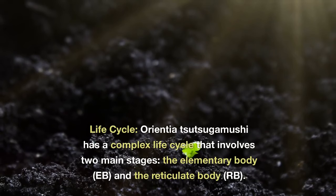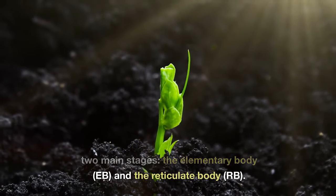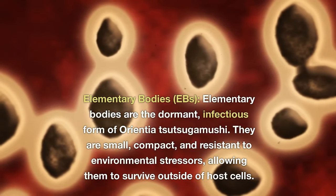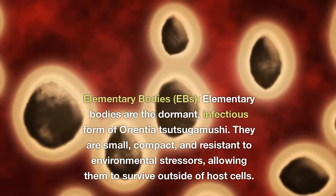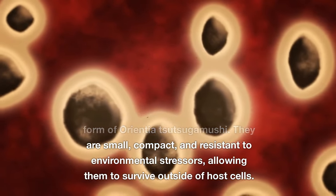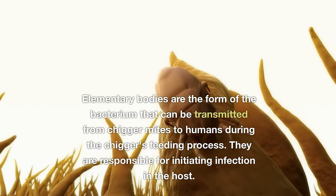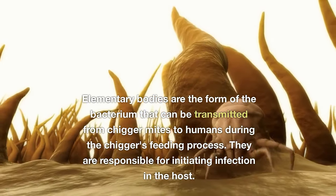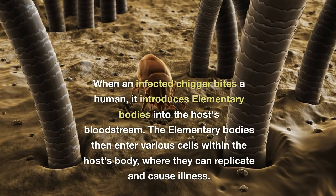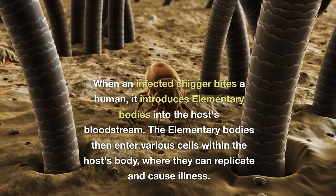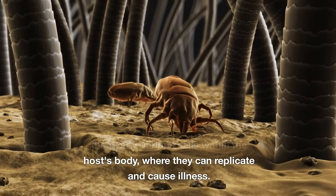Orientia tsutsugamushi has a complex life cycle that involves two main stages: the elementary body (EB) and the reticulate body (RB). Elementary bodies are the dormant, infectious form of Orientia tsutsugamushi. They are small, compact, and resistant to environmental stressors, allowing them to survive outside of host cells. Elementary bodies are the form of the bacterium that can be transmitted from chigger mites to humans during the chigger's feeding process, and they are responsible for initiating infection in the host. When an infected chigger bites a human, it introduces elementary bodies into the host's bloodstream, where they enter various cells and can replicate and cause illness.